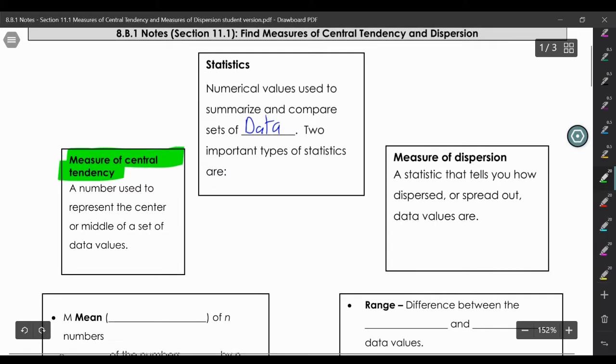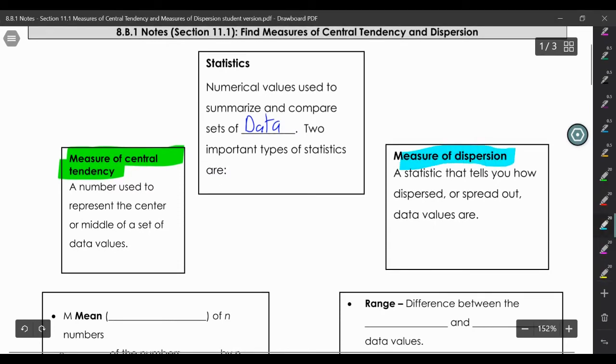And then we have measures of dispersion. When you're dispersing something you're spreading it out. Measures of dispersion tell you how far apart the data is, how spread out the data is.